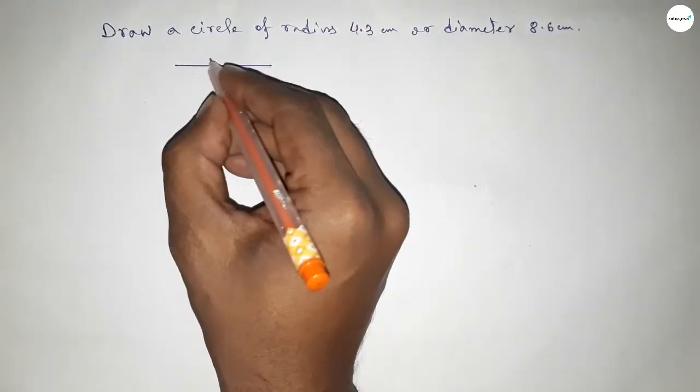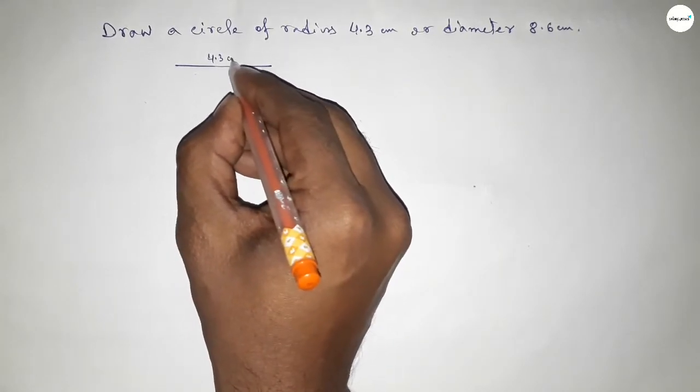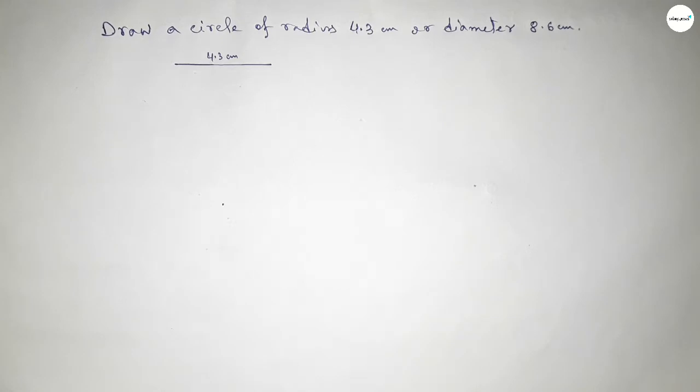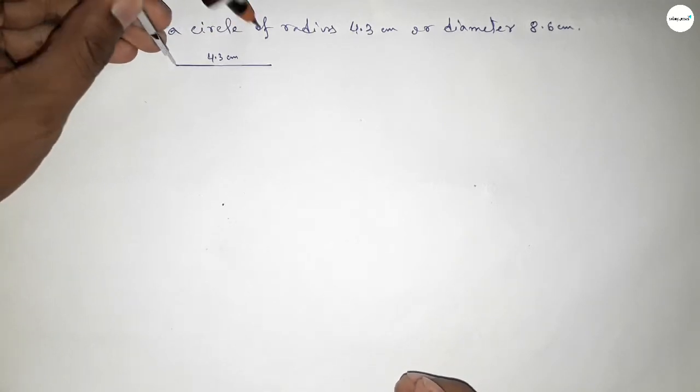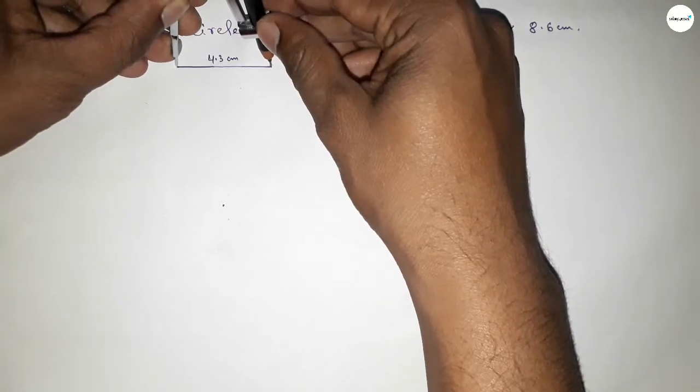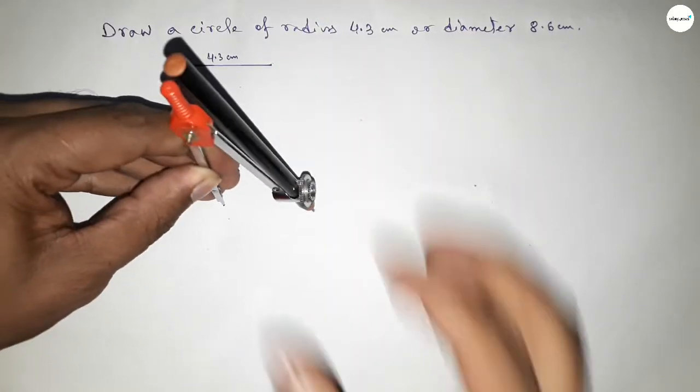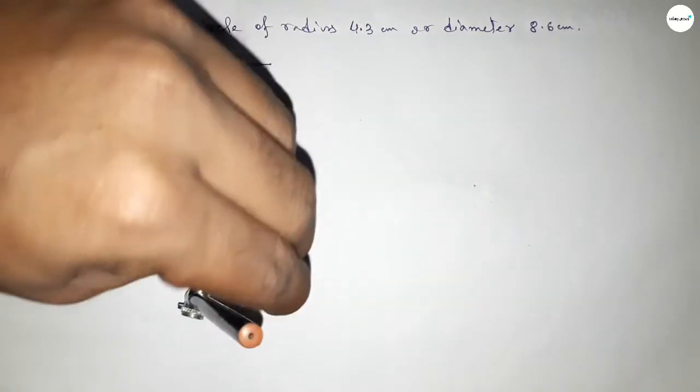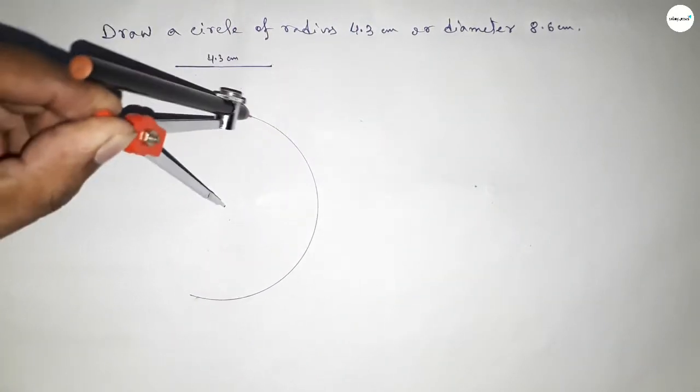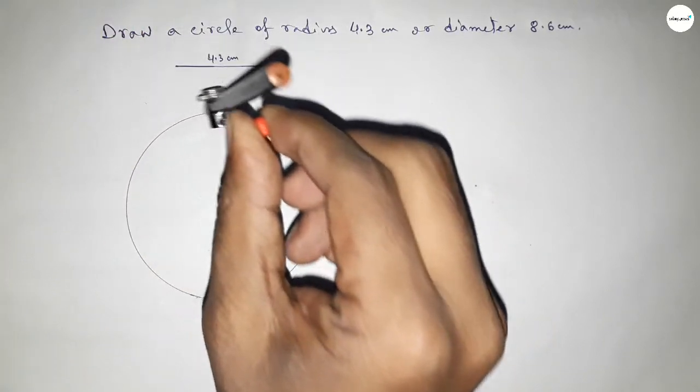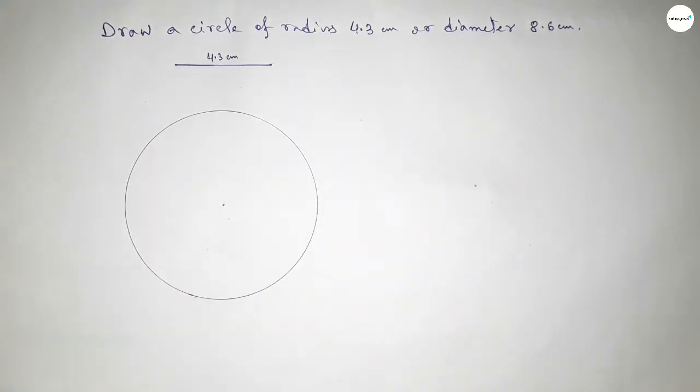4.3 centimeters. Next, taking here a point. Now taking the length 4.3 centimeters by using a compass by this way, and putting the compass on this point and drawing an arc by this way, which represents a circle with radius 4.3 centimeters.